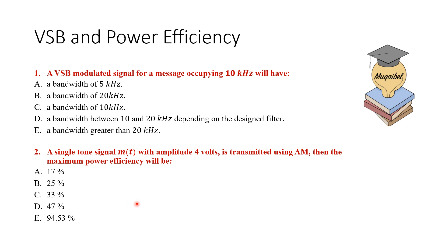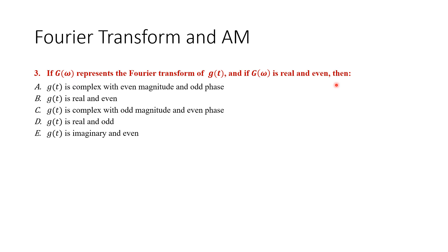Question number three says: if G(ω) represents the Fourier transform of g(t), and if G(ω) is real and even, then what do you know about g(t)? A, B, C, D, or E. You can pause the video and take two minutes. Hint: you may want to see some examples from the table to find the answer.